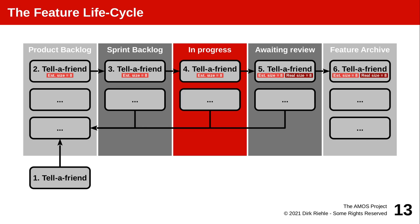At any stage during a sprint — specifically at the end of the sprint — the feature may not pass review, or it may still be in progress, or it wasn't even started. Then it's moved back into the product backlog for new scheduling again in the upcoming sprint planning meeting. So there are seven stages for feature requests as they go from being just an idea to having been implemented and documented.